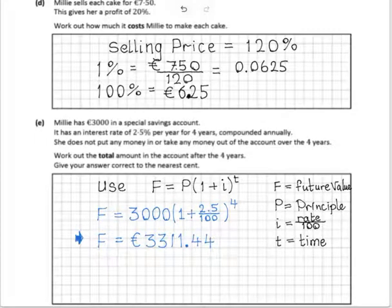In part D and E, Millie sells a cake at €7.50. The profit is 20%, therefore we can set the selling price to 120%. All we need to do now is divide the 750 by 120 to get 1%, so we always go back to 1%.